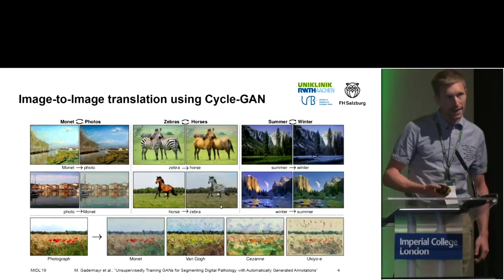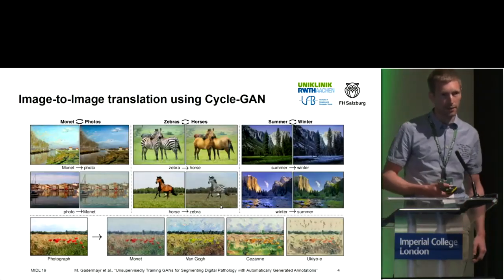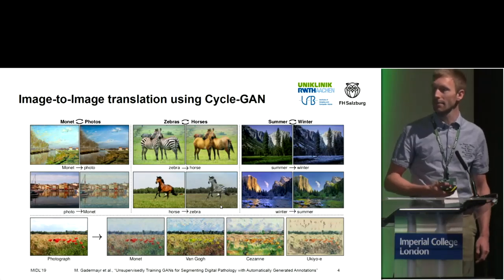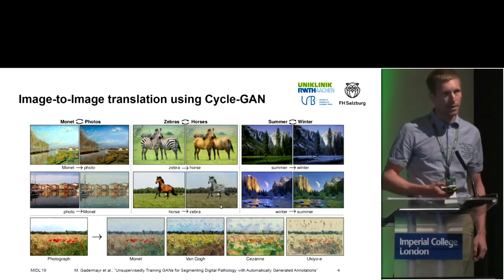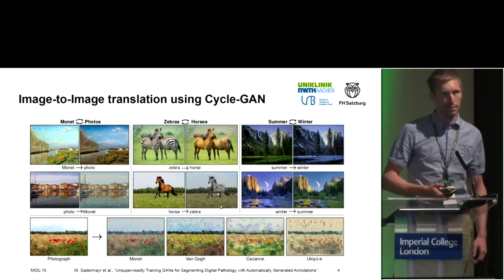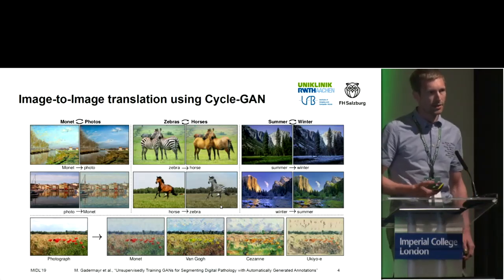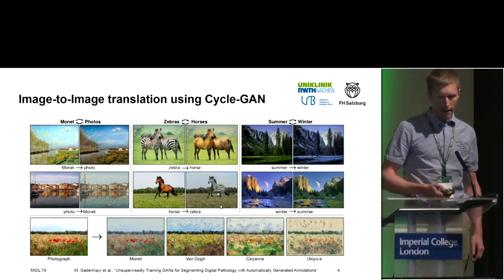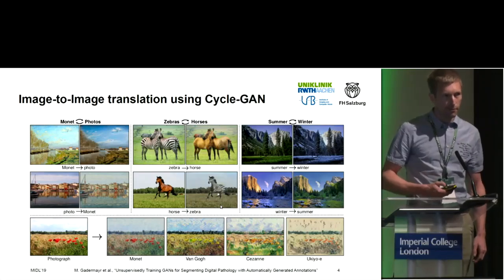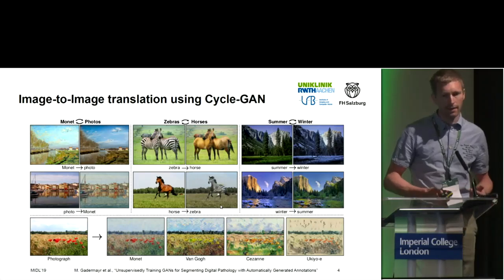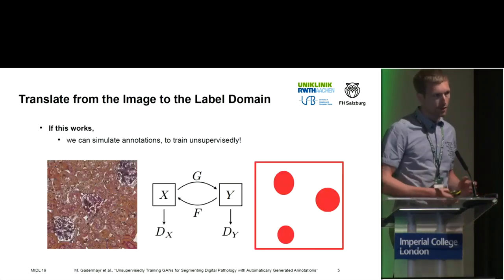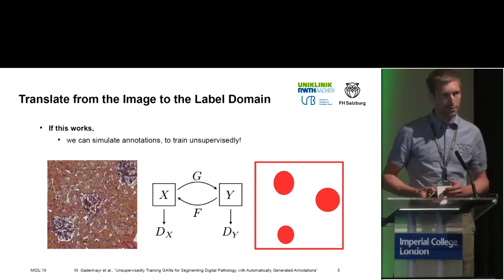What we did is we used the same network — CycleGAN. We already showed that CycleGAN can be applied quite well to translate between different stains. We presented a method to do stain translation last year at MICCAI, and now we want to go one step further. Here we try to use the method, which is based on unpaired data, to do a translation from a stain to a virtual label domain.